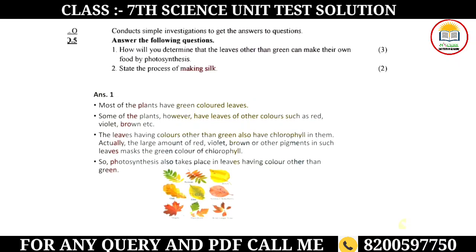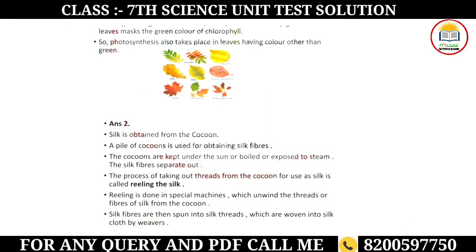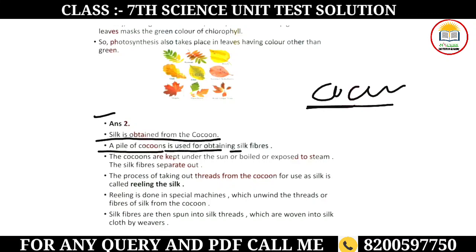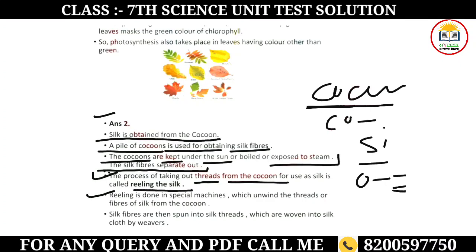The last question asks: describe the process of making silk. What is the process used to obtain silk fiber? The cocoons are kept under the sun, or boiled, or exposed to steam, so that the silk fibers separate out. The process of taking out threads from the cocoon is called reeling. The cocoon is processed in special machines which unwind the threads of silk fibers from the cocoon.